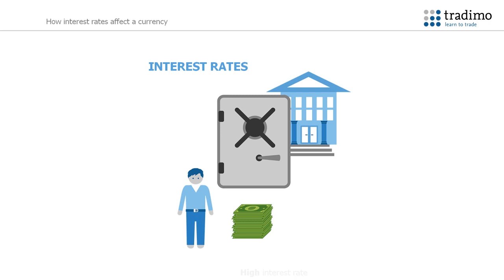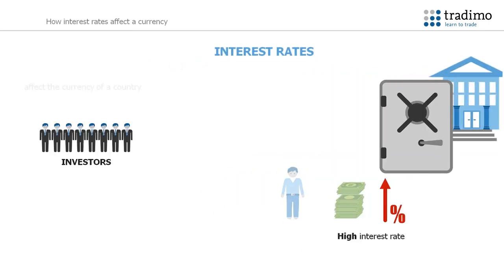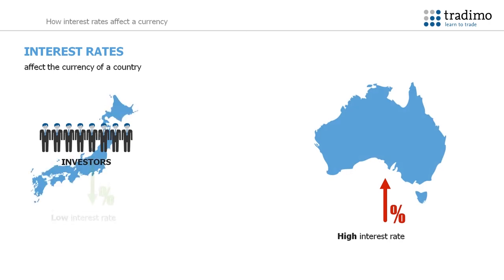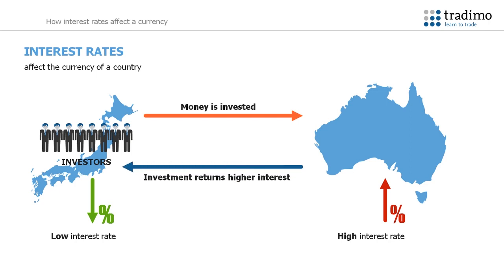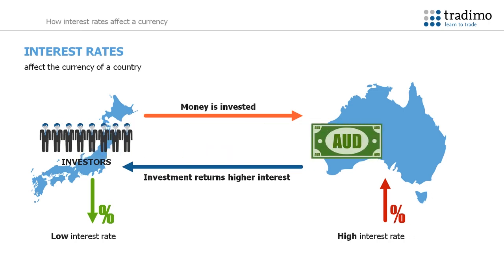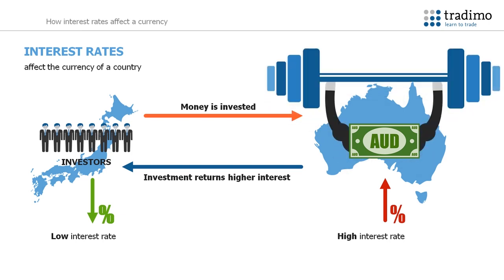A higher interest rate means that you gain higher rates of return for the money you hold in your savings account. This is also why higher interest rates benefit those who have savings. If one country has a higher interest rate than another country, money will flow into the country with the higher interest rate, because investors will get more interest on their money. Because the low interest rate currency has to be exchanged for the higher interest rate currency, this increases the demand for the higher interest rate currency, and the currency appreciates in value.